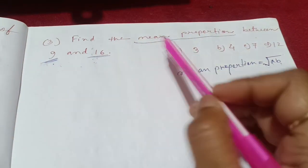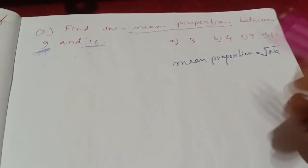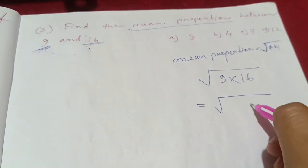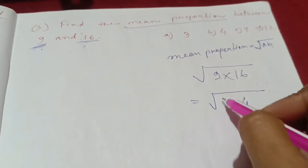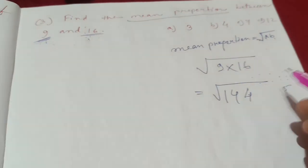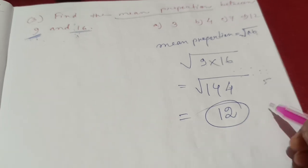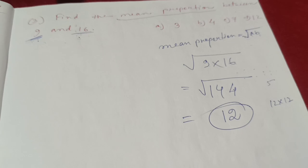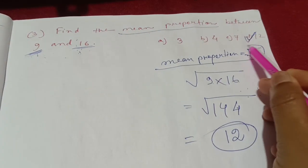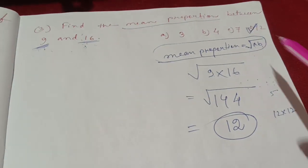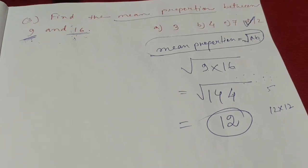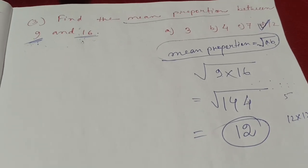If we look at ab: a equals 9 and b equals 16, so ab equals 144. The root of 144 is 12, because 12 into 12 equals 144. So the mean proportion between 9 and 16 is 12. If you are confused, please comment. Don't forget to like the video — you can request questions and all your questions will be answered.